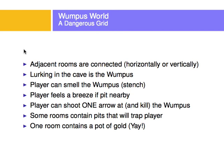In the cave there is a Wumpus — a monster — and the players can smell the Wumpus because it emits a stench. The players feel a breeze if a pit is nearby. Some rooms contain pits that will trap a player, so it's good that you feel a breeze before it, because everything is dark. A player can shoot one arrow and kill the Wumpus — or shoot and not kill it, but that's the only arrow you have. One of the rooms contains a pot of gold, which is the prize.